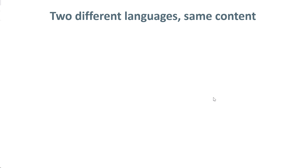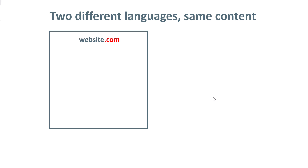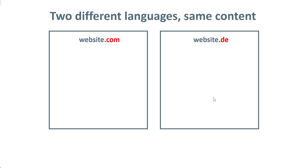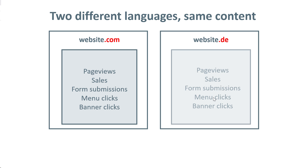But there might be situations where there are different domains and different websites, but they are very similar. For example, one website is in English for the English market, and then there is the same website with very similar content translated into German. In that case, both sites will track the same things — page views, sales, form submissions, and so on. Since the analytics setup will be very similar and the business will be using the same tools like Google Analytics, Google Ads, and Facebook Pixel, I would recommend using the same Google Tag Manager container.